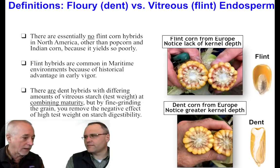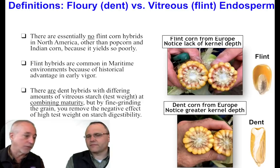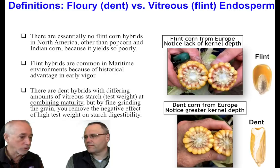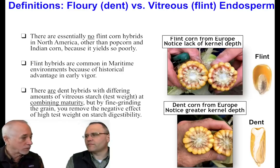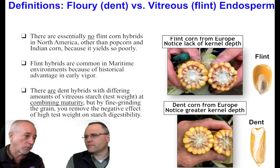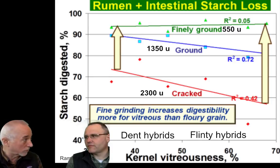Even in Europe, there really isn't a negative effect to that harder starch in dry corn, as long as we grind it fine enough — and every dairy already grinds their corn fine for that reason. On the fermentation side, whether we're talking high moisture corn or corn silage, there really isn't that much of that hard flinty starch in the kernel at that maturity — it gets more complex with proteins as it gets closer to combining maturity. All of our data shows that if you look at seven-hour starch digestibilities, there really isn't a big difference between any of the hybrids at corn silage or high moisture corn maturity.